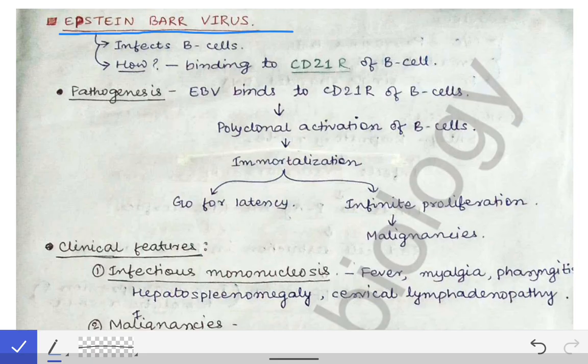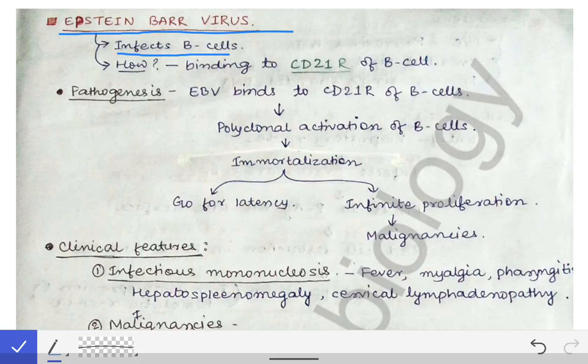The Epstein-Barr virus infects the B cells. Like we have seen the parvoviruses which were infecting the RBC precursors, this Epstein-Barr virus infects the B cells — B lymphocytes. They are a type of lymphocyte called B lymphocytes, and by infecting them, some of the malignancies associated with B lymphocytes are caused by this virus.